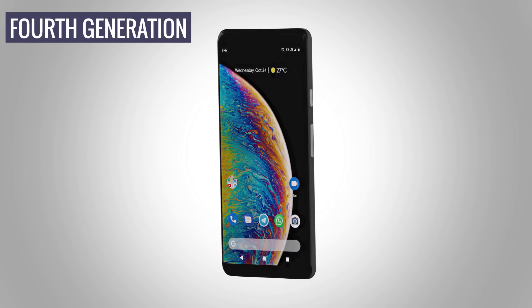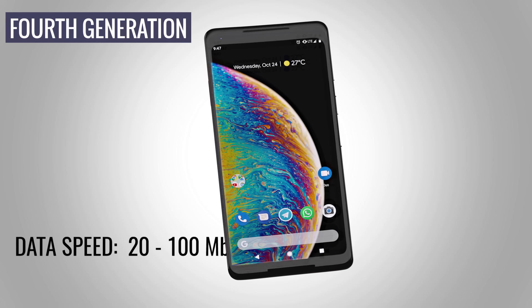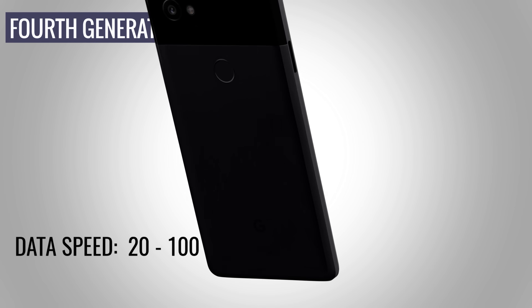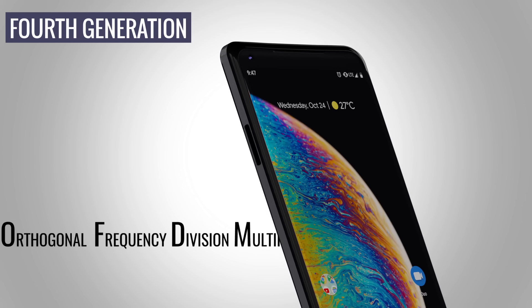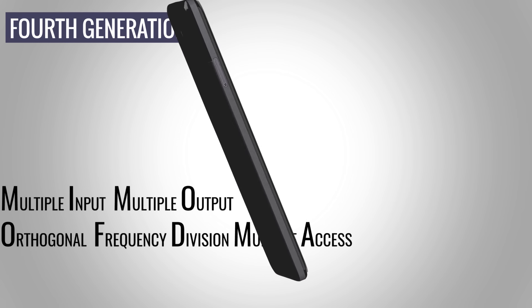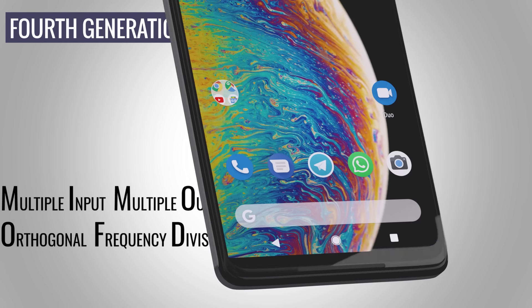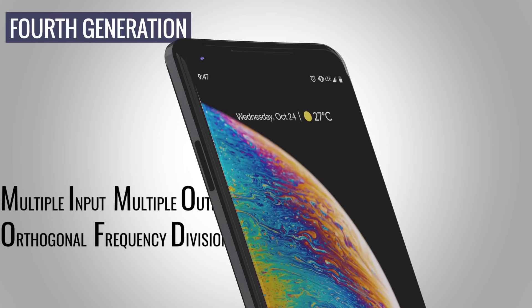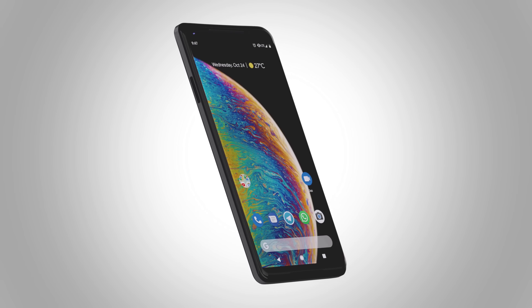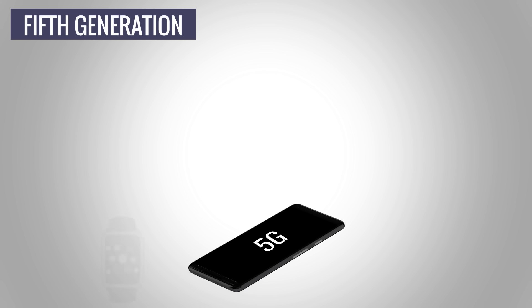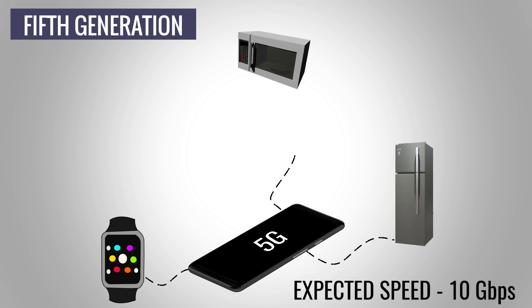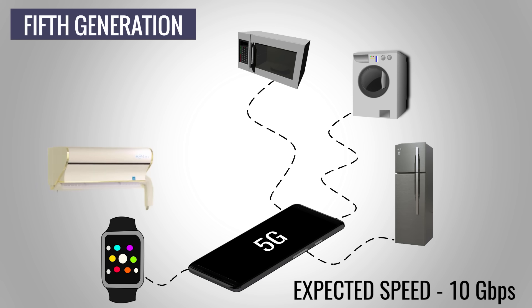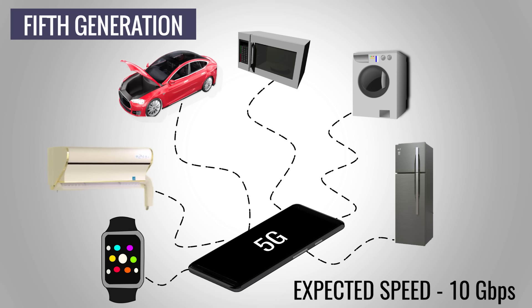Next came 4G, which achieved speeds of 20 to 100 Mbps, suitable for high-resolution movies and television. This higher speed was made possible due to OFDM multiple access technology and MIMO technology. MIMO uses multiple transmitter-receiver antennas inside both the mobile phone and the towers. The next generation, 5G, to be rolled out soon, will use enhanced MIMO technology and millimeter waves. It will provide seamless connectivity to support the Internet of Things, such as driverless cars and smart homes.